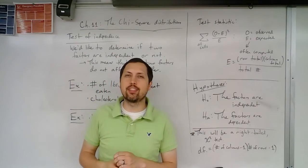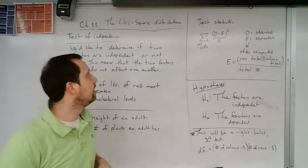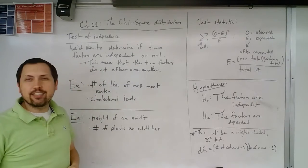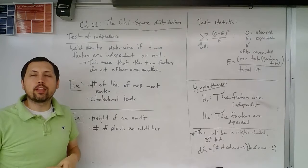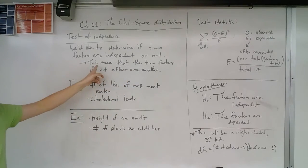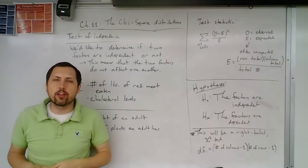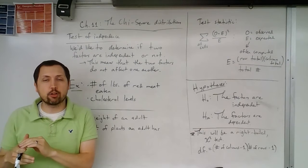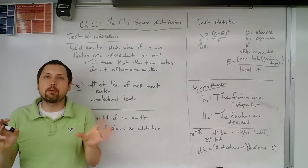Let's move on to a different test that uses the chi-square distribution. We'd like to determine if two factors are independent or not. So we'd like to understand what does independent even mean. Independent means that the two factors do not affect one another. That's the intuition behind it. There's very rigorous mathematical ways of describing two things being independent.